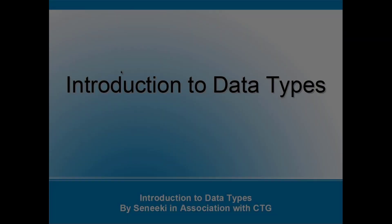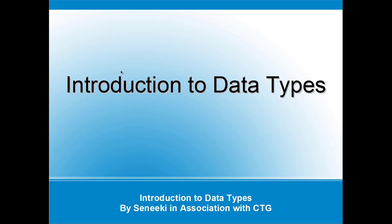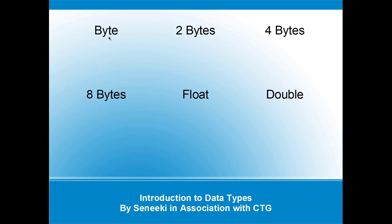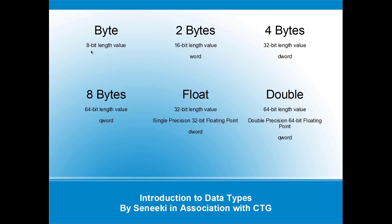Hey everyone. We had a question about what the different data types actually are, so I'm going to give you a quick introduction. We have byte, two bytes, four bytes, eight bytes, float, and double — these are the most common types you'll come across in Cheat Engine. A byte has an 8-bit length, two bytes is 16-bit, and so on. Float is 32-bit and double is 64-bit.